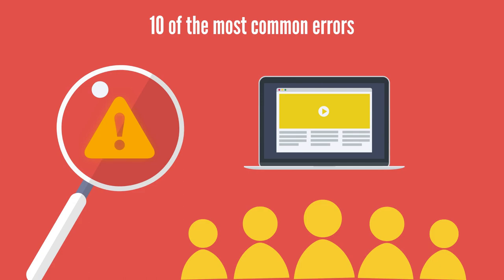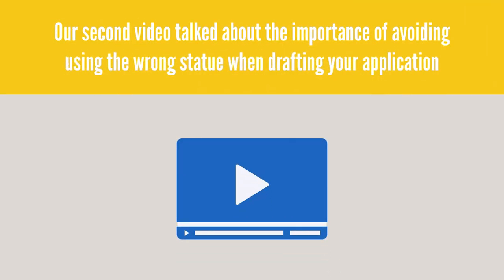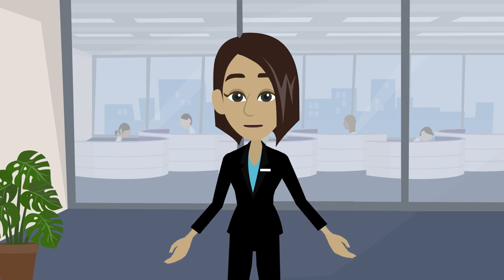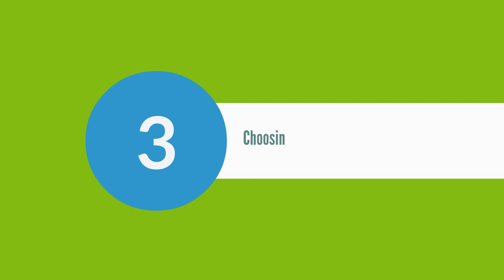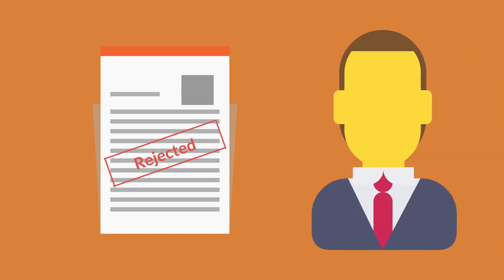This video series will teach you how to avoid 10 of the most common errors before submitting corporate documents. Our second video talked about the importance of avoiding using the wrong statute when drafting your application. Let's continue our series by discussing another common error to avoid — number three: choosing a corporate name that is unavailable.